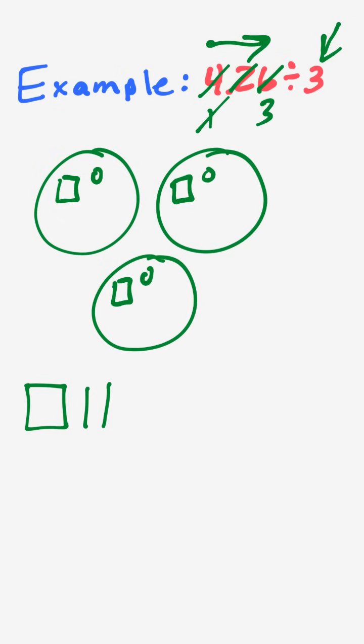I'm left with three hundredths now, and I do have enough again to give one more to each group — so one, two, and three more hundredths. Now I'm done distributing.